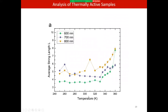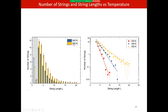As a function of both temperature and lattice constant, the average string lengths show an increasing trend. Increasing lattice constant increases average string length; increasing temperature also increases average string length. Similarly, the number of strings and string lengths increase with temperature.